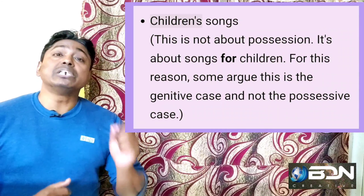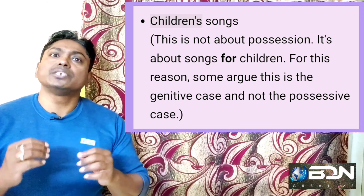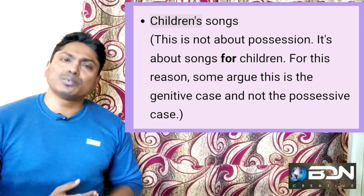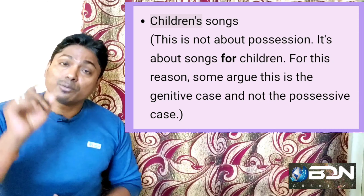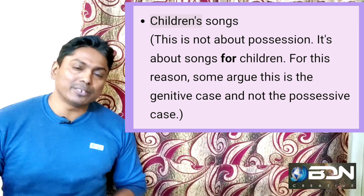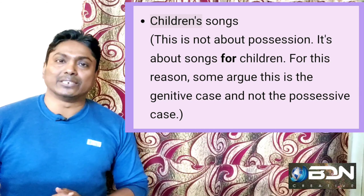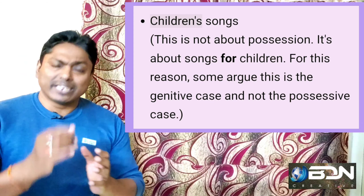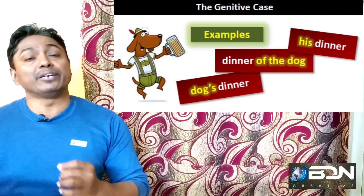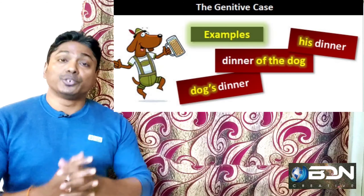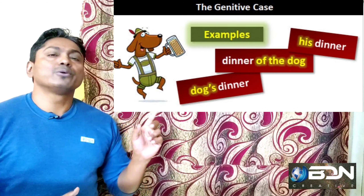Next is the Genitive case. The Genitive case and Possessive case are similar, but there is a difference. The Possessive case suggests ownership using an apostrophe, for example 'the bike of someone.' The Genitive case is not only about possession — it suggests a broader relationship.